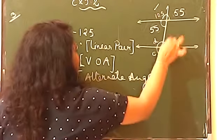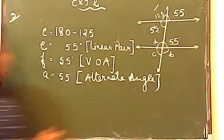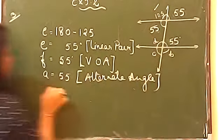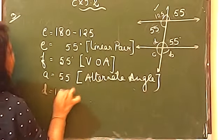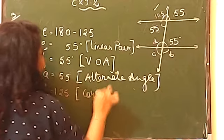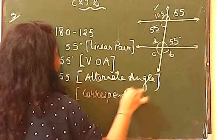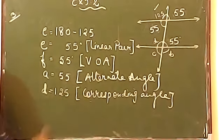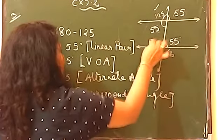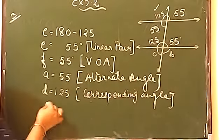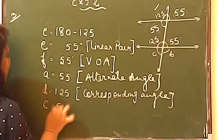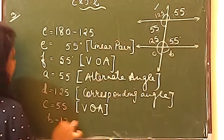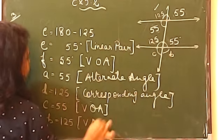Since A equals 55°, D can be found using the linear pair. Also, D equals 125° because of corresponding angles — the lines are parallel, so corresponding angles are equal. C will also be 55° by vertically opposite angles (VOA), and D equals 125° — reason is also VOA.